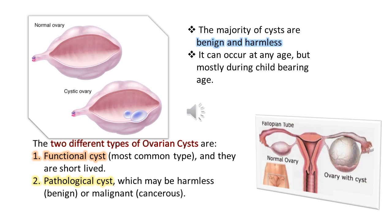The majority of cysts are benign and harmless. They can occur at any age but mostly during childbearing age. There are two different types of ovarian cysts: functional cysts, which are the most common type and are short-lived, and pathological cysts, which may be harmless (benign) or malignant (cancerous).